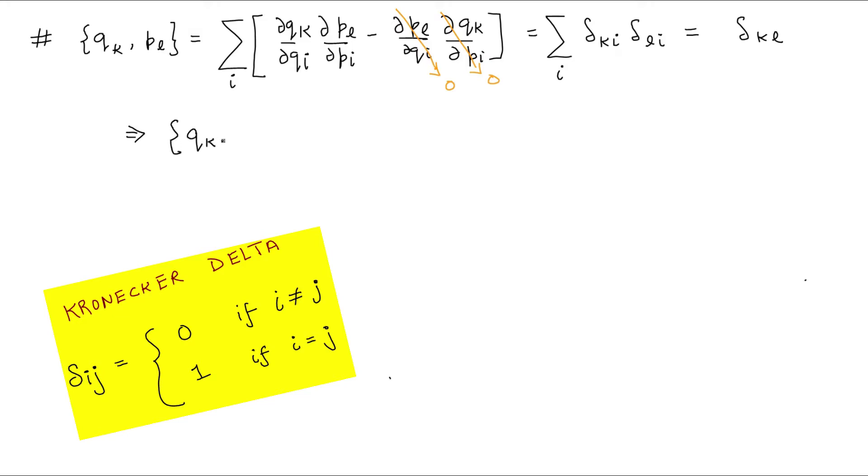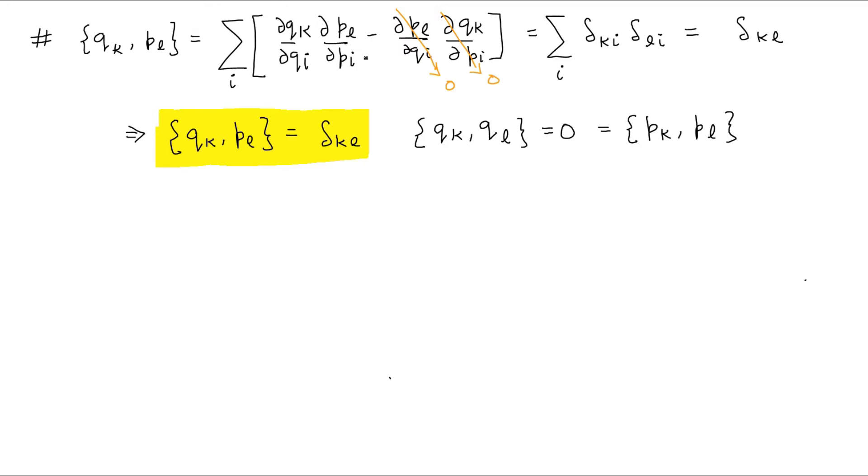We now have the result that the Poisson bracket of a generalized coordinate and generalized momenta is equal to one if the momenta is conjugate to the coordinate, that is, they both carry the same index, otherwise it is zero. Similarly it can be shown that the brackets of Q's among themselves and P's among themselves always evaluate to zero.